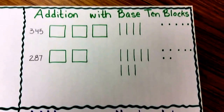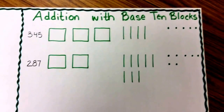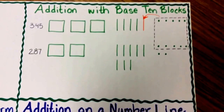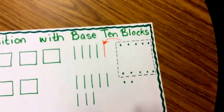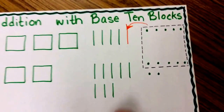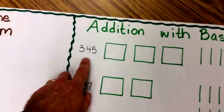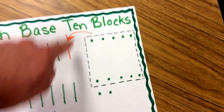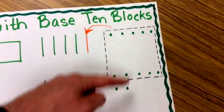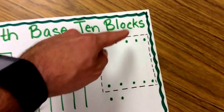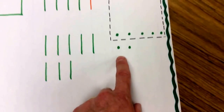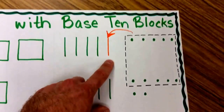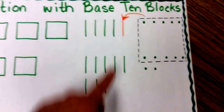So now in this addition with the base ten blocks, I need to combine these and show my regrouping. Just like with the standard algorithm, I started in the ones place. I had five ones at the top for the 345 and seven ones representing the seven in 287. I grouped them and noticed that when I have a total of ten, I need to regroup. I put a box around those ten, leaving me with two ones, and drew an arrow showing that another group of ten joined the tens place.